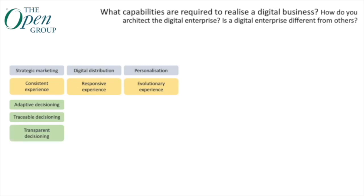Decisioning is a huge component for us, and I imagine a huge component for a lot of other companies. If I think about how we used to do architectures, the idea of a decision-based architecture is not something that's been at the forefront. The idea now that you would model decisions as first-class citizens, and then seek to manage and automate those, and provide a degree of traceability and transparency to your customers as well as regulators — I think that's something new and something that's probably going to grow in the future.